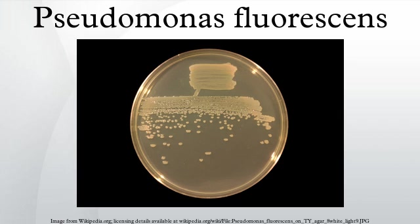General characteristics: P. fluorescens has multiple flagella. It has an extremely versatile metabolism and can be found in the soil and in water. It is an obligate aerobe, but certain strains are capable of using nitrate instead of oxygen as a final electron acceptor during cellular respiration. Optimal temperatures for growth are 25 to 30 degrees Celsius. It tests positive for the oxidase test. Pseudomonas fluorescens is also a non-sacrolytic bacteria. Heat-stable lipases and proteases are produced by P. fluorescens and other similar pseudomonads.